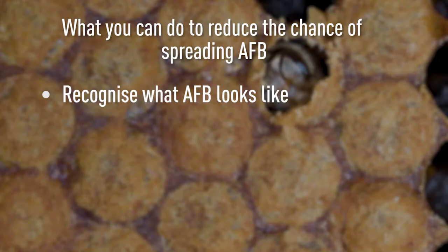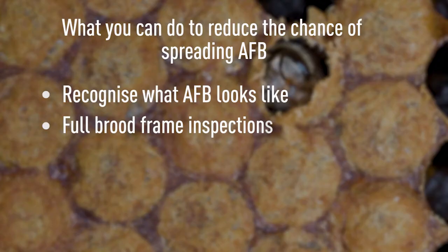In this video we covered how American foulbrood is spread between colonies and how a beekeeper's activities can affect that. What I want to do now is go through the most important things that beekeepers can do to reduce the spread of the disease. First, the really obvious one — which we'll talk about later — is making sure that you can recognise American foulbrood. The next one is very important: do full brood frame inspections. When you inspect a colony, you need to check every frame of brood — don't be tempted to just check one or two frames.